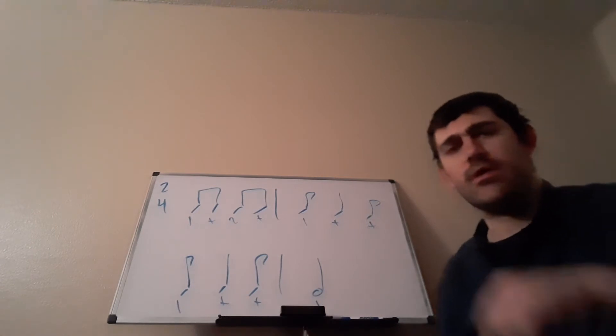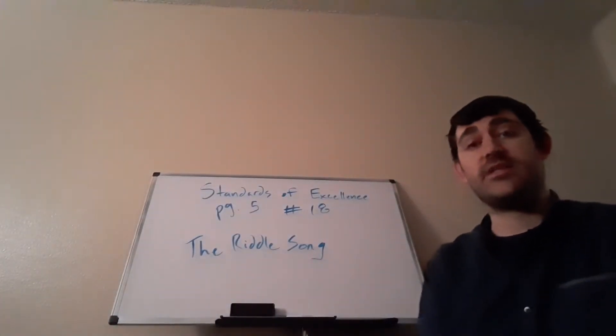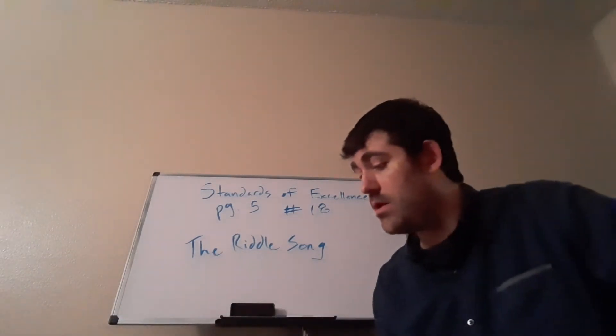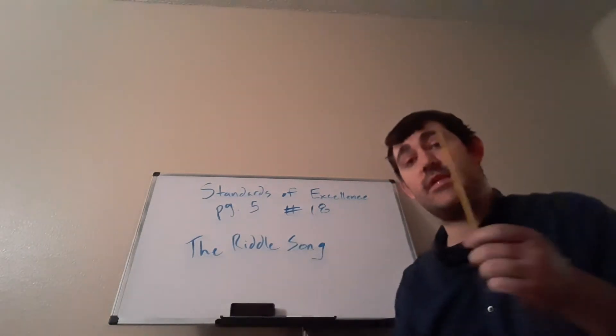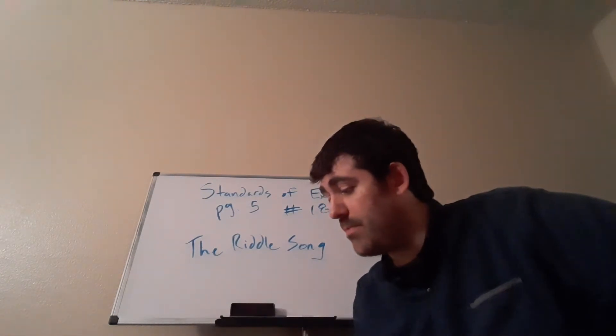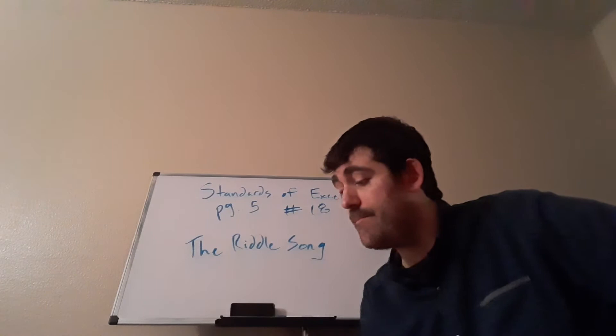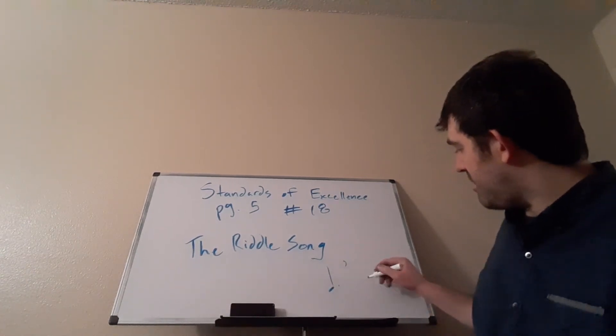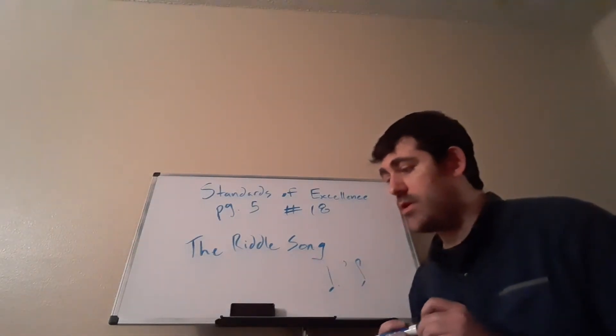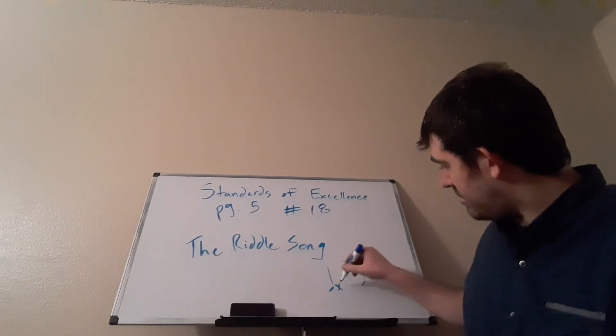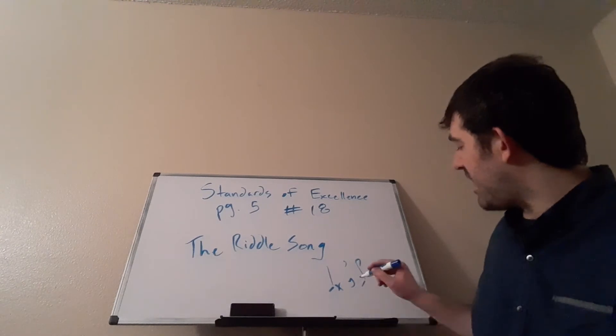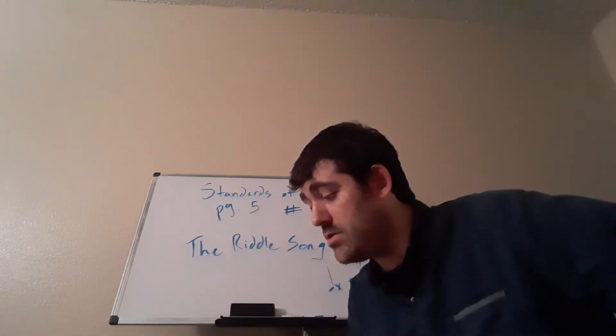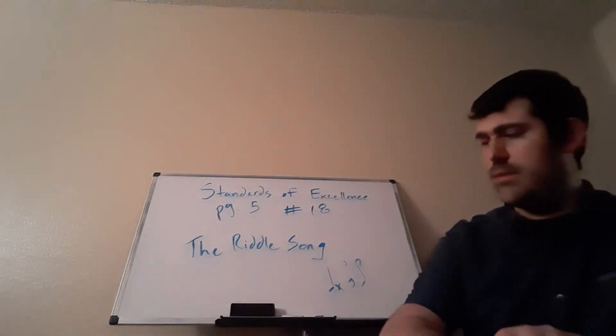Let's take a look at our Standards of Excellence book. In our Standards of Excellence book, we will be focusing on page five, number 18, the Riddle Song. So, before we play, take out your pencils. We need to make some changes because we have some breath marks. So, I'd like you to locate measure four. The rhythm has dotted quarter, breath mark, eighth note. This is what we're going to do to change that rhythm. We're actually going to cross this out, making it a quarter note. And then, we're going to put an eighth rest right there, because that's what we're going to breathe. You need to make the same changes to measures eight, twelve, and that's it.